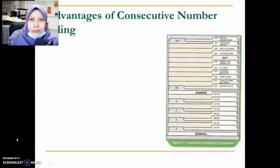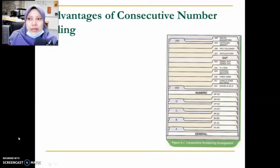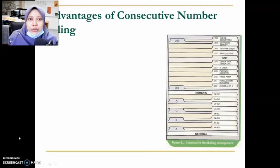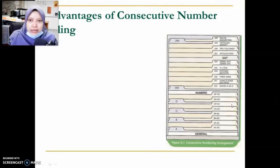Hi student, this is the teaching video for Part 1, Part 3, which is on the advantages and disadvantages of consecutive number filing. As we learned in a previous video, consecutive number filing is where we arrange records in assigned order from the lowest to the highest numbers, and there are 4 components of consecutive number filing. On the right side of the screen, I've put pictures of the storage so you can have a view as I explain.